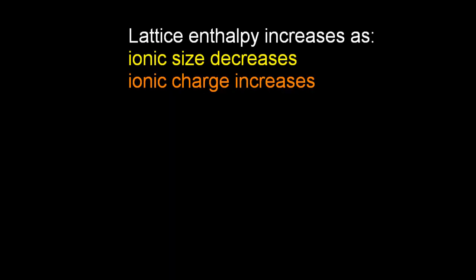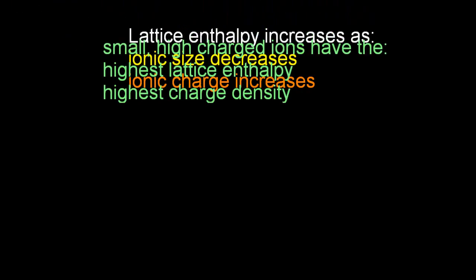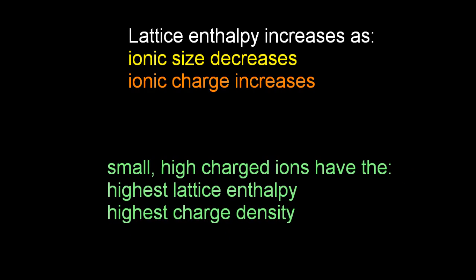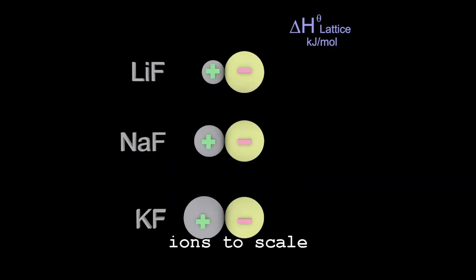And so the lattice enthalpy increases as the ionic size decreases, and the ionic charge increases. So that means a small, highly charged ion, well, they're going to have the highest lattice enthalpy. And this is all to do with charge density. I'll put a link here to explain charge density a bit more.